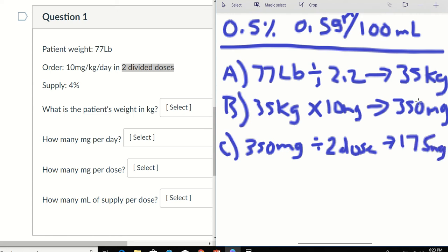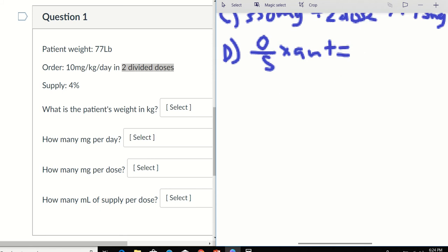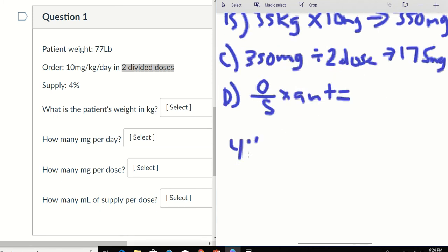Alright, so we got their weight. We got their per day amount. And we got their per dose amount. So we know our last step is going to be order over supply times the amount. So for percentage, we got to convert our supply into something that we're familiar with. So 4%. What does 4% mean to us? 4 grams for every 100 mL. Okay, now it's something that we're more used to using. Amount of drug per volume.